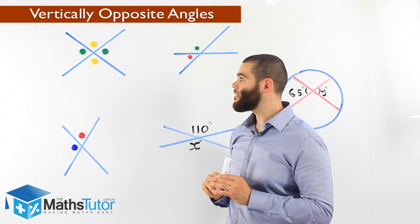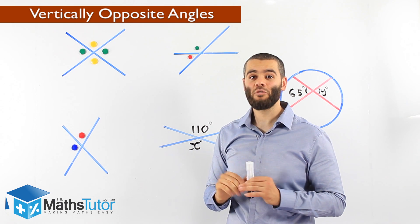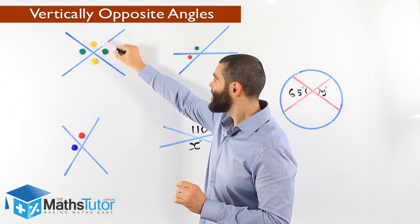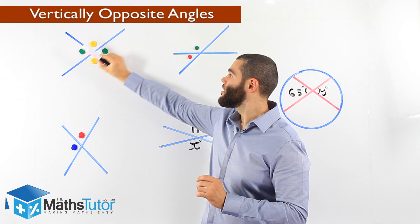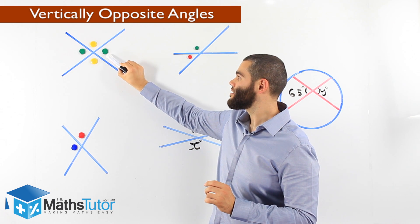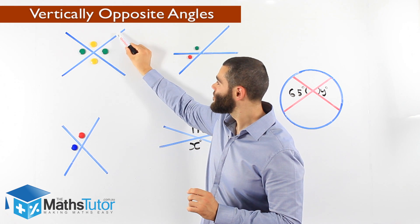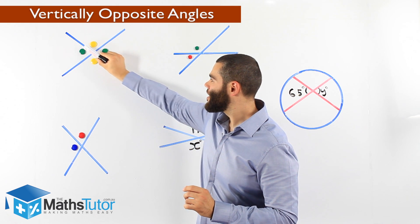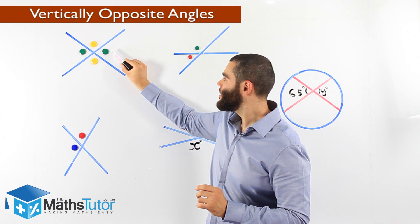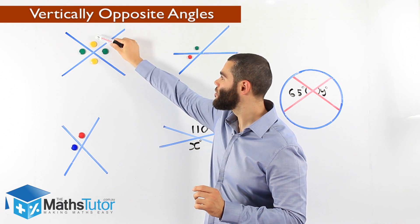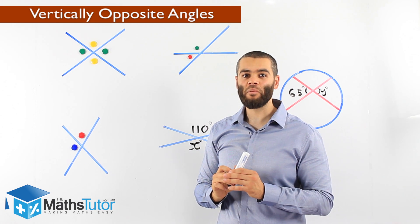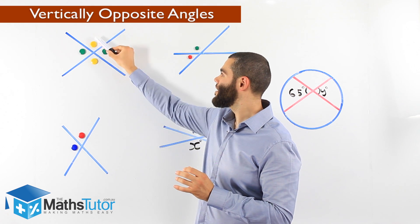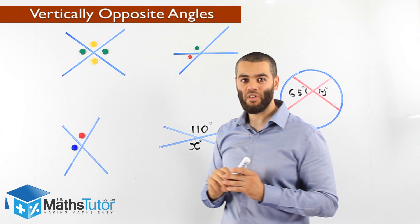What you also notice is that the vertically opposite angles are equal. This angle here is equal to that angle there, and this one is equal to that one — you can see the size is exactly the same. So vertically opposite angles are equal, and they are directly opposite one another.